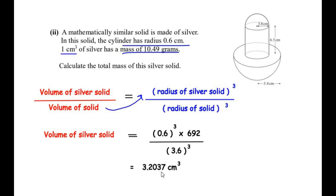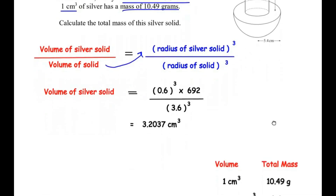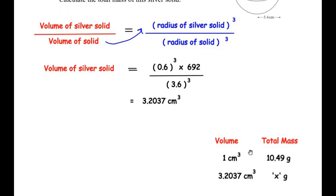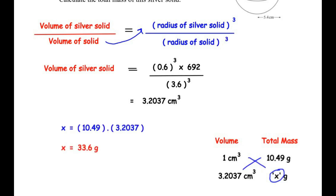Now we find the total mass of the silver solid. Using cross-multiplication: if 1 cubic centimeter has a mass of 10.49 grams, then for a volume of 3.2037 cubic centimeters, let the total mass be x grams. So x = 3.2037 × 10.49, which gives x = 33.6 grams. That is the total mass of the silver solid.